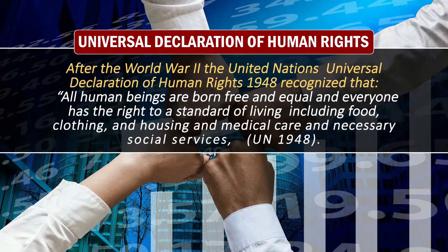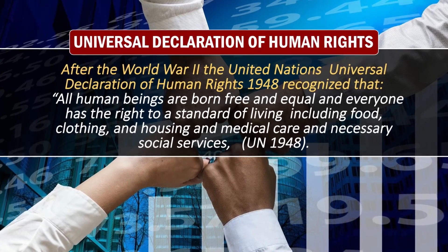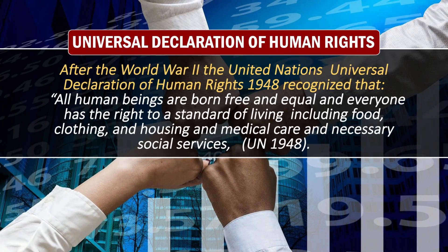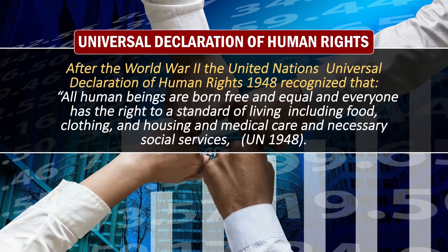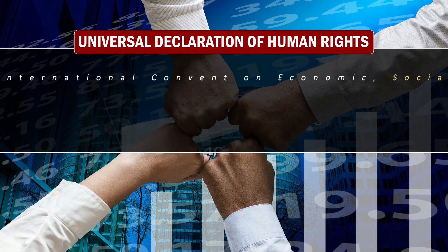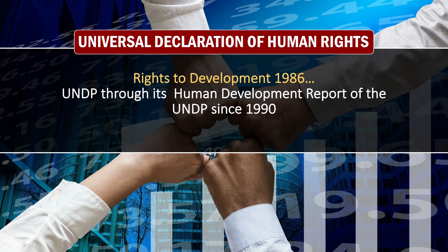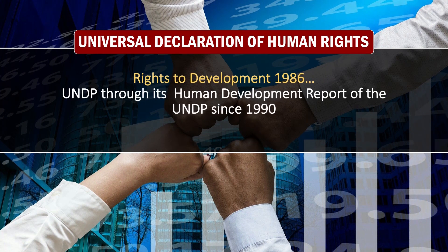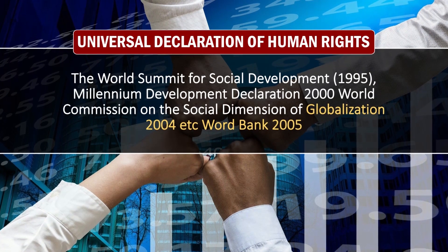Coming from the broader to the local, the Universal Declaration of Human Rights of the UNO 1948 widely talks about all human beings being born free and equal, and everyone having the right to a standard of living including the right to food, clothing, housing, medical care, and necessary social services. This is also widely reflected in the International Covenant on Economic, Social and Cultural Rights 1966, the Rights to Development Declaration 1986, the Social Development Report 1990, the World Development Summit 1995, and various World Bank reports.